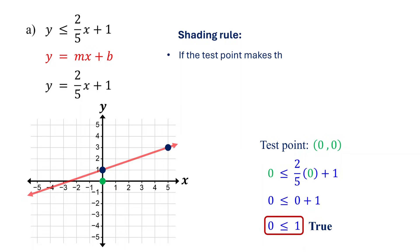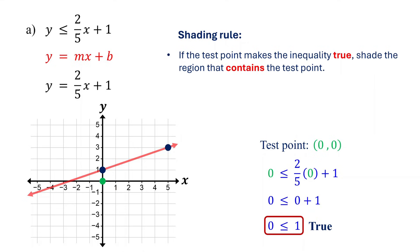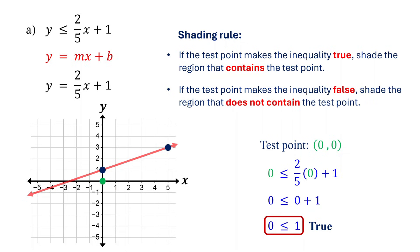If the test point makes the inequality true, shade the region that contains the test point. If the test point makes the inequality false, shade the region that does not contain the test point. Here, since our test point makes the inequality true, we shade the region containing the test point. That's your graph. Every point in the shaded region and on the boundary line is a solution to the inequality, while points in the unshaded region are not.